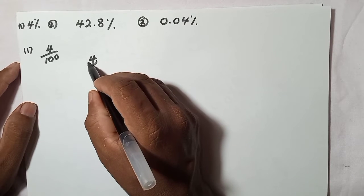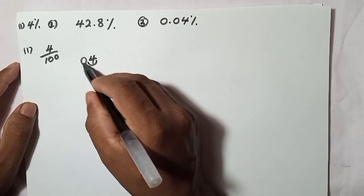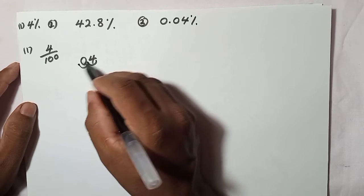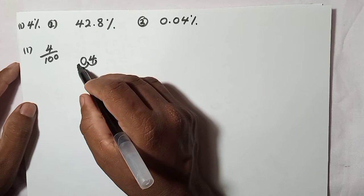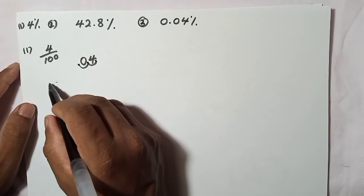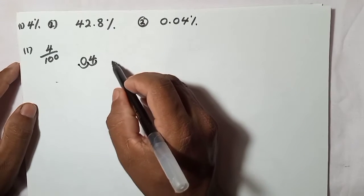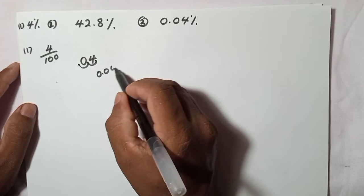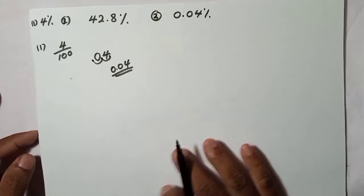Moving the decimal point: I move it once — there's no digit there so I put a zero — then I move it a second time, passing two digits total. So 4% as a decimal is 0.04.